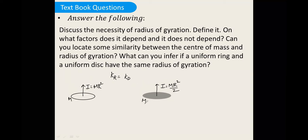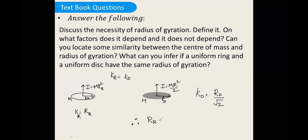Since k does not depend on m, we consider they have the same mass m. Let the radius of the ring be r_r and radius of the disc be r_d. The k of ring equals r_r, and k of disc equals r_d divided by root 2. Setting k_r equal to k_d gives r_r equals r_d divided by root 2, or equivalently, r_d equals root 2 times r_r. This is the relation between the radii of the ring and disc when they have the same radius of gyration.